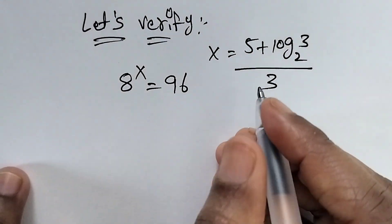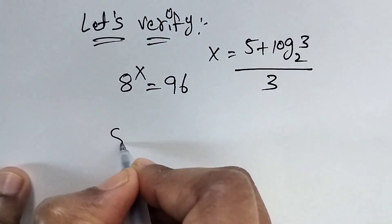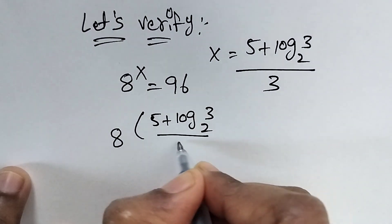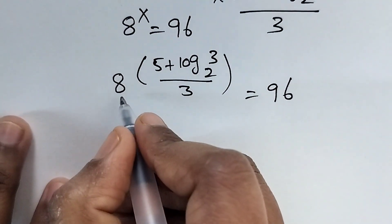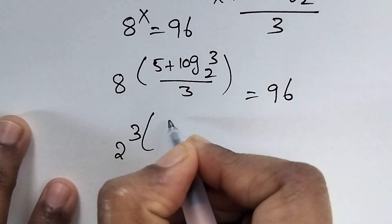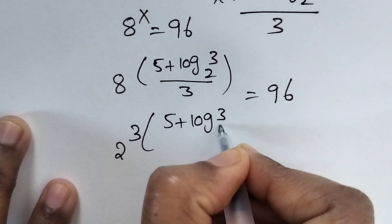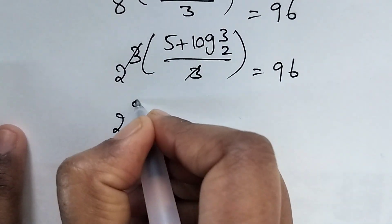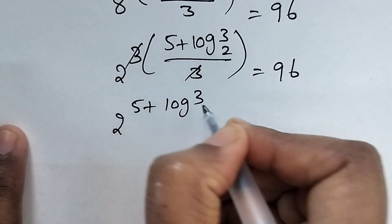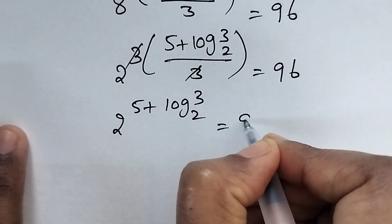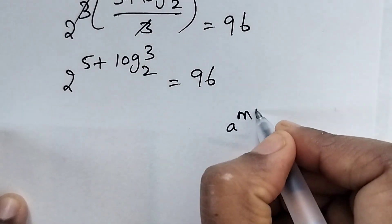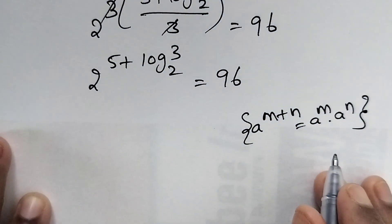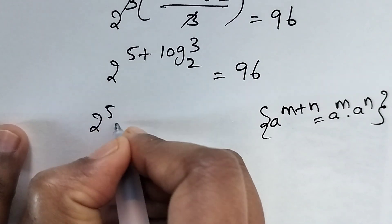So let's verify whether this value is right or not. The question is 8 to the power of x equals 96, and x equals (5 + log of 3 to the base 2) divided by 3. Just substitute the value of x: 8 to the power of (5 + log₂3)/3 equals 96. Here 8 we can write as 2 cubed, so the 3s cancel, giving 2 to the power of (5 + log₂3) equals 96. Using the rule a^(m+n) = a^m × a^n, we can write 2^5 times 2^(log₂3).